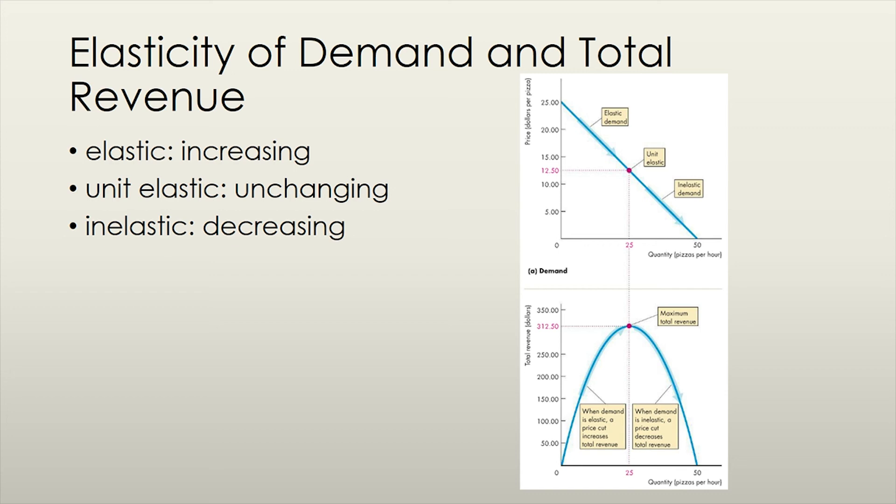Similarly, if a firm knows that the elasticity of demand for the good that it is selling is inelastic, then it won't earn any more revenues by decreasing the price of the good, since a decrease in price brings about a proportionally less increase in the quantity demanded. Thus, it could increase the price of the good in order to increase revenues. Maximum revenues occur at the point where the elasticity of demand of the good is equal to 1, or where the good is unit elastic.